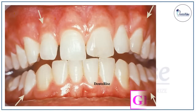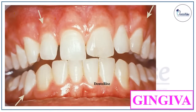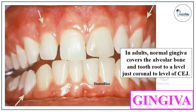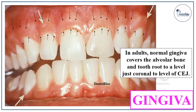Starting with what gingiva actually is — gingiva in layman's language is called as the gums, the pink portion we see in the mouth. In adults, the normal gingiva covers the alveolar bone and the tooth root to a level just coronal to the level of CEJ, as you can see in the figure. The brown line roughly demarcates the level of CEJ and the gingiva is present a little coronal to the CEJ.